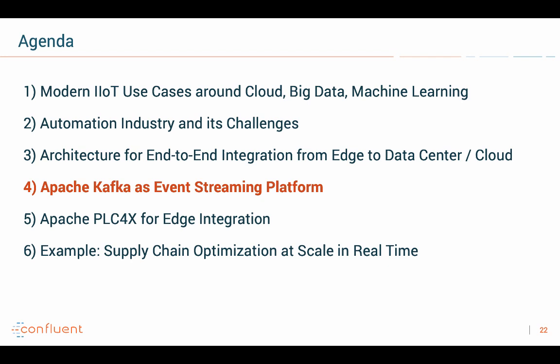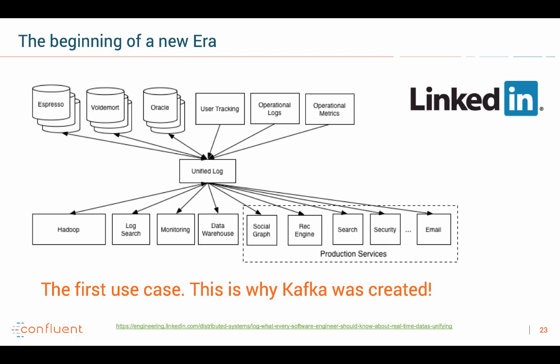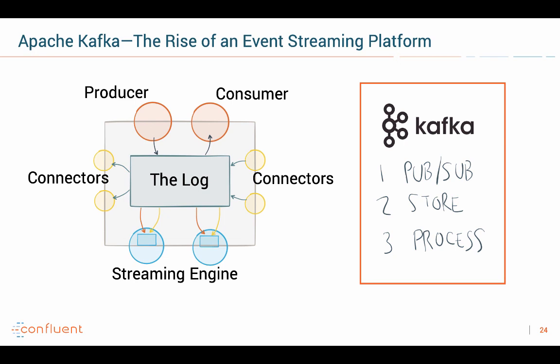Let's now take a look at the specific technologies. Apache Kafka was built around 10 years ago at LinkedIn. The first use case was already to integrate many different systems — both legacy systems like their Oracle database, which is not really scalable, flexible, or cheap, and also modern new technologies which are open and scalable to do big data analytics, real-time processing, graph analytics, and recommendation engines. This is what LinkedIn built Kafka for.